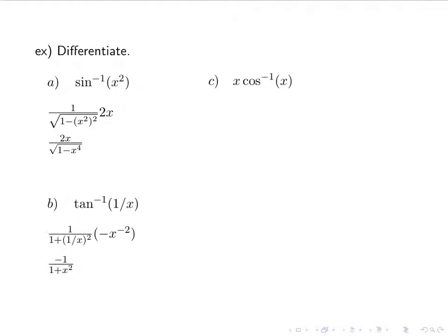So I did a couple with the chain rule. Let's try one with the product rule. We have x times cosine inverse of x. I'm going to start with u prime v — the derivative of x is just 1, so I have just v, which is cosine inverse of x. And I'm going to add to it the derivative of cosine inverse of x times x. Remember, the derivative of cosine inverse is negative, so I have negative x over the square root of 1 minus x squared. I can't simplify further, so it just stays the way that it is.